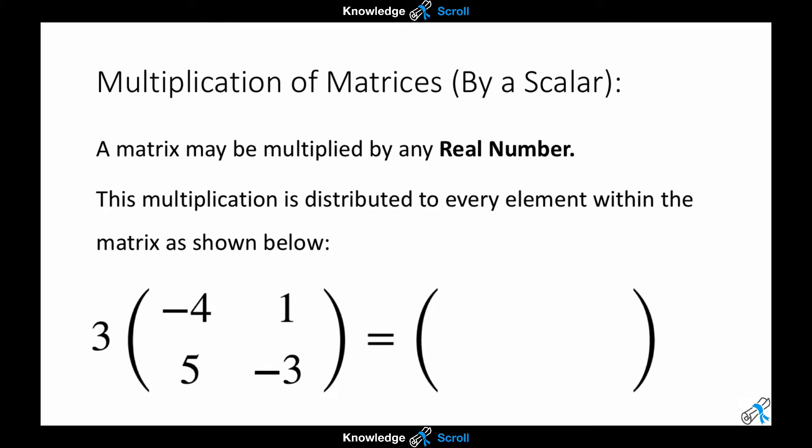The 3 on the outside multiplies the negative 4 to give me negative 12. It also multiplies the 1 to give me 3. It multiplies the 5 to give me 15. And finally, it multiplies the negative 3 to give me negative 9.